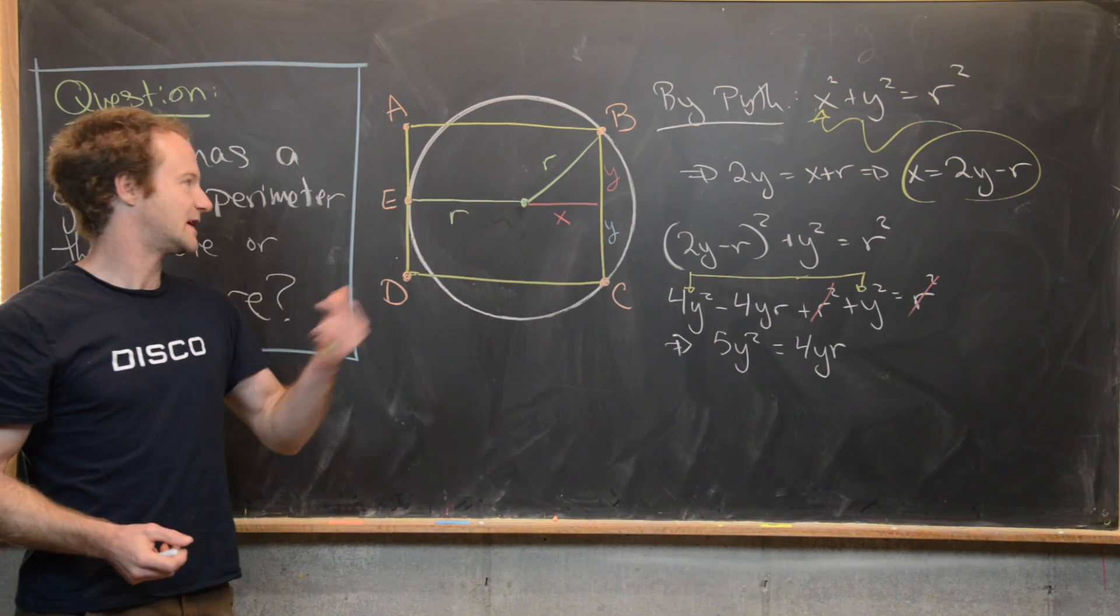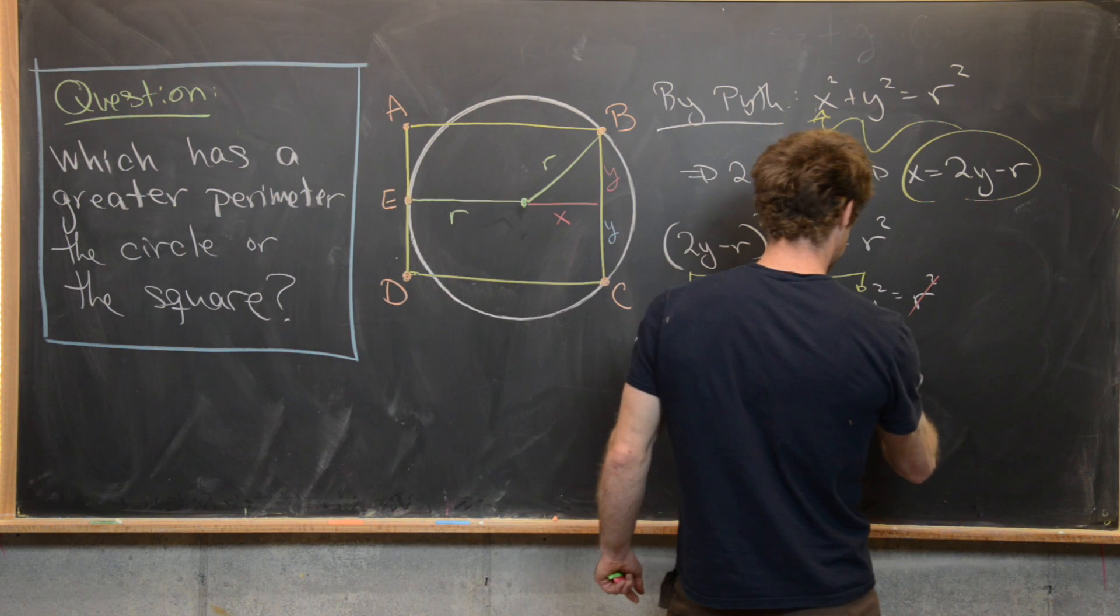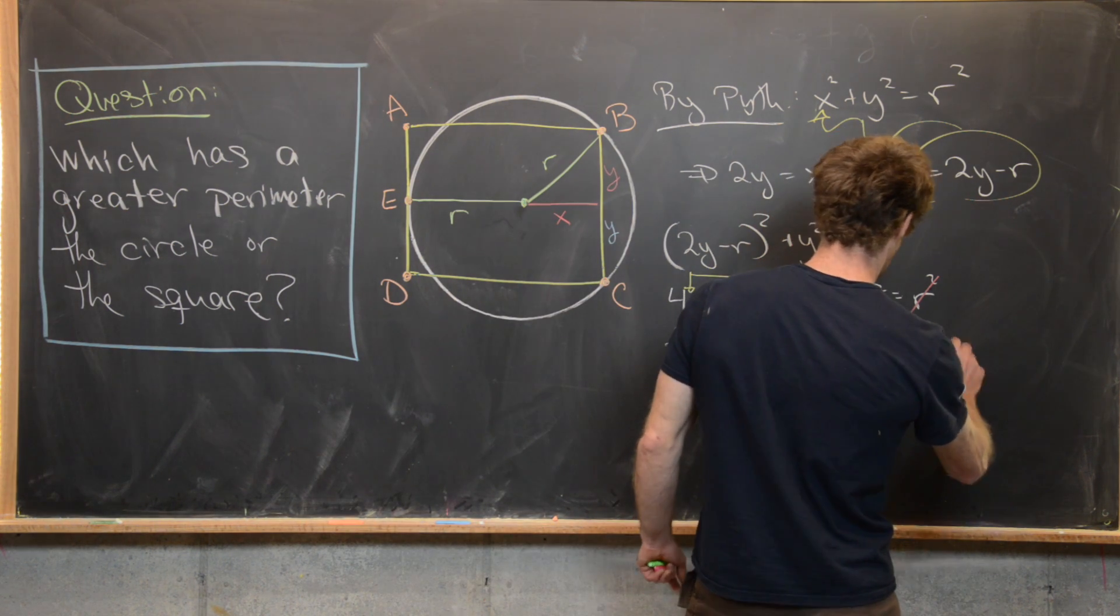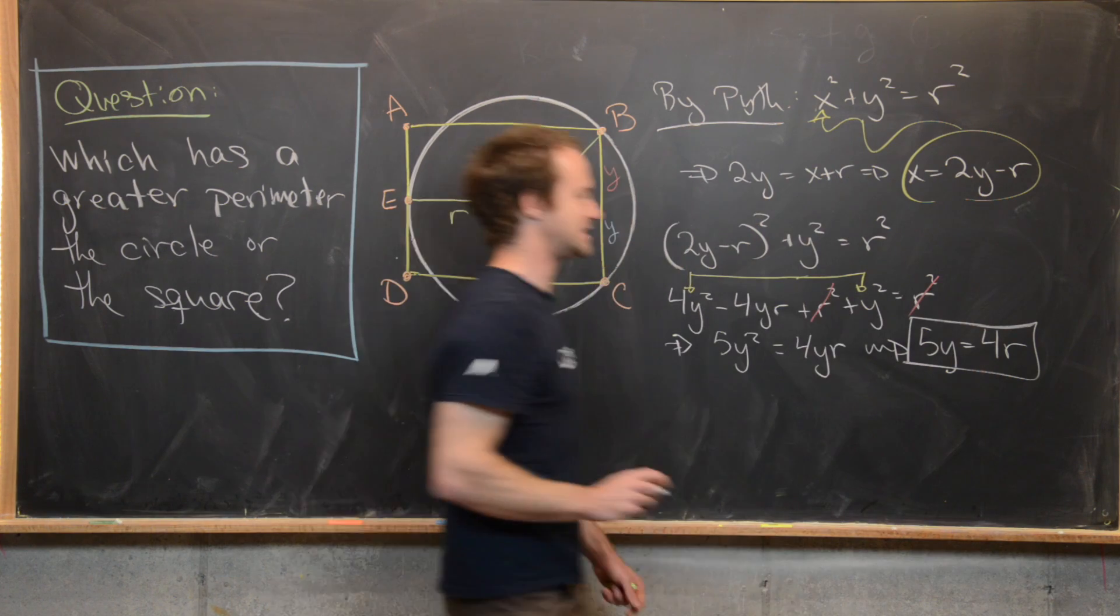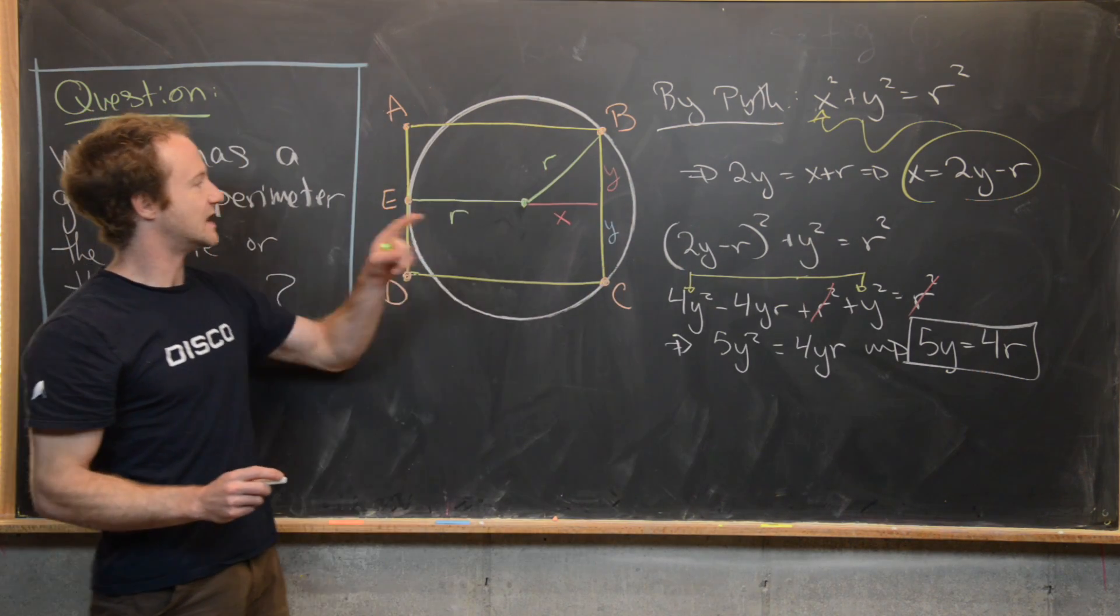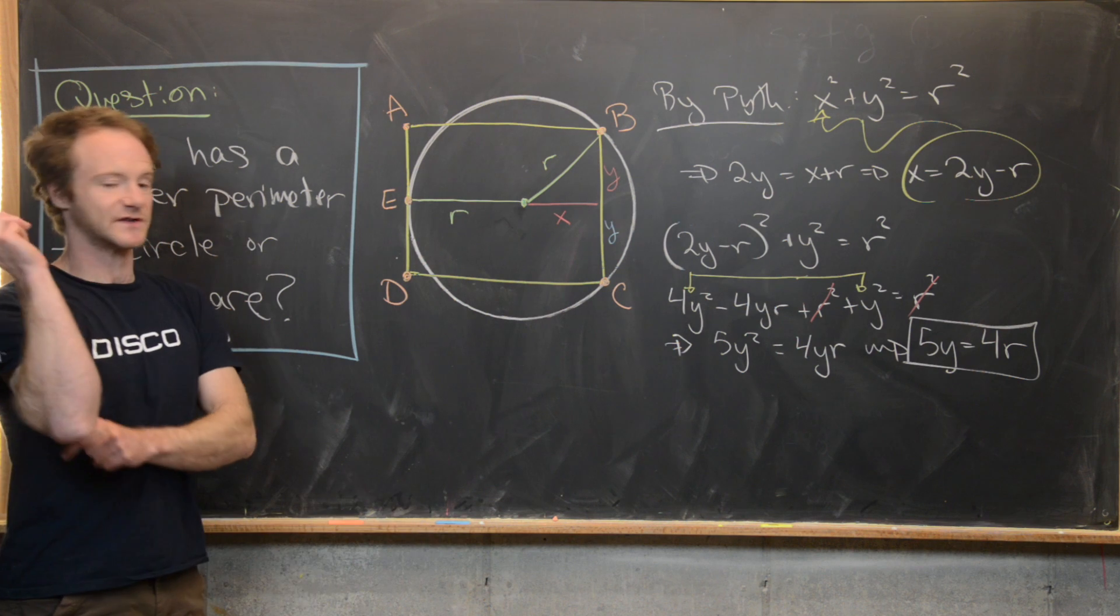Next, we can divide by Y because we know that the side length is not equal to zero. And that's going to tell us that 5Y is equal to 4R. So we've got this nice relationship between the side length of the square and the radius of the circle.